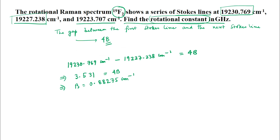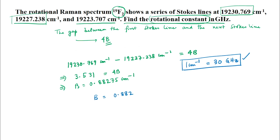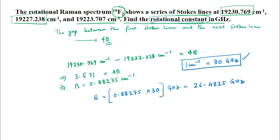We know that 1 cm⁻¹ equals 30 gigahertz. So B equals 0.88275 times 30 gigahertz, which gives B equals 26.4825 gigahertz. The answer to the question — finding the rotational constant B in gigahertz — is 26.4825 GHz.